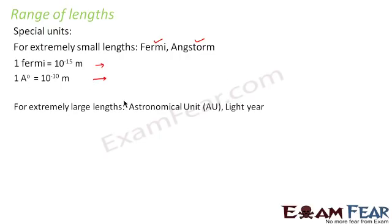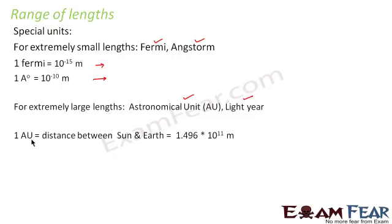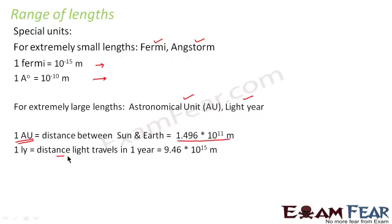For extremely large lengths we use the astronomical unit and the light year. The astronomical unit is the distance between the Sun and the Earth, approximated as 1.496×10¹¹ meters. The light year is the distance light travels in one year, approximated as 9.46×10¹⁵ meters. So for very small lengths we use Fermi and Angstrom; for very large lengths we use the astronomical unit and light year.